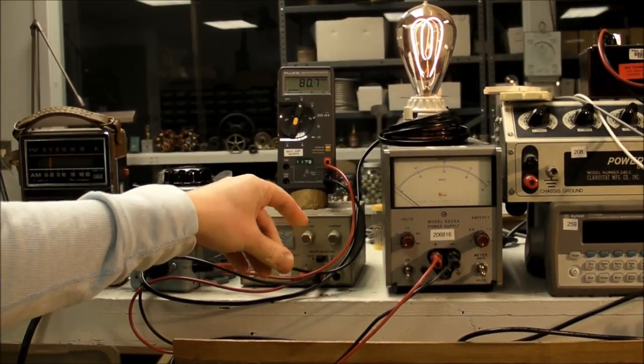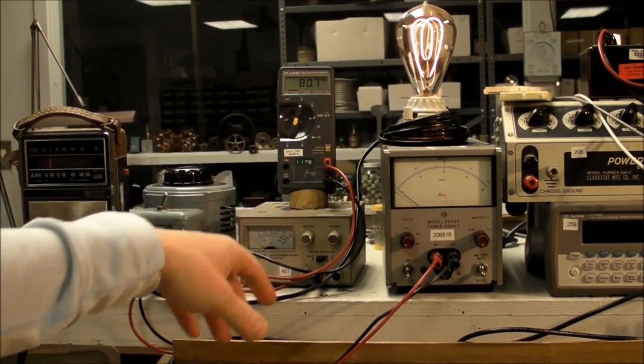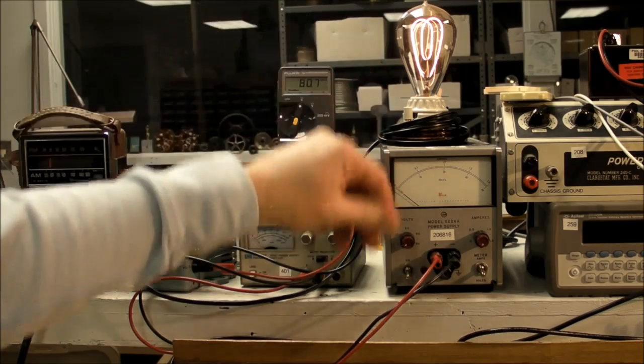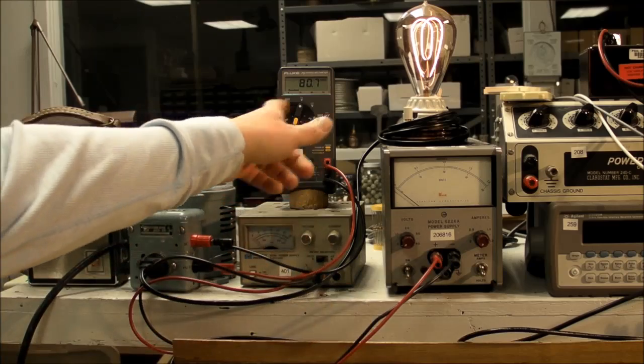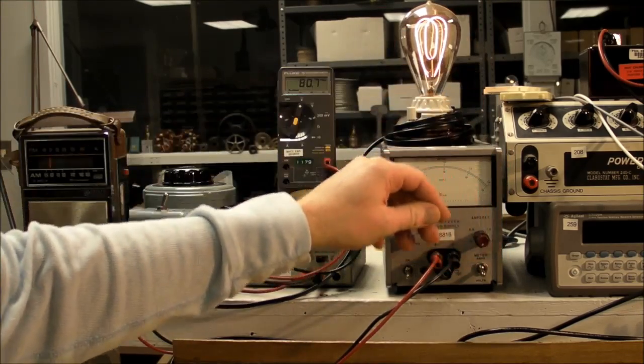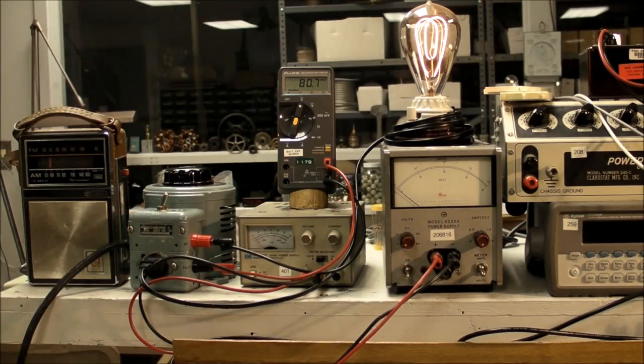Some DC power supplies, an old Fluke multimeter there just to look at whatever voltage I happen to be putting out. Right now I'm putting 80 volts onto this old-school carbon filament light. I just put that on sometimes for ambience.